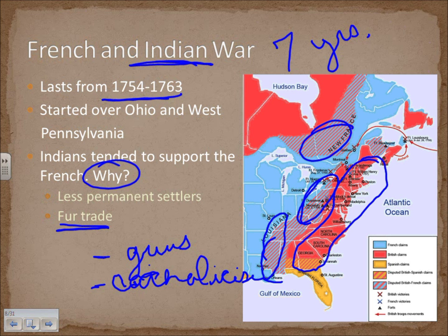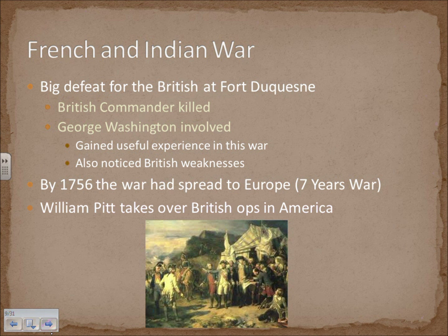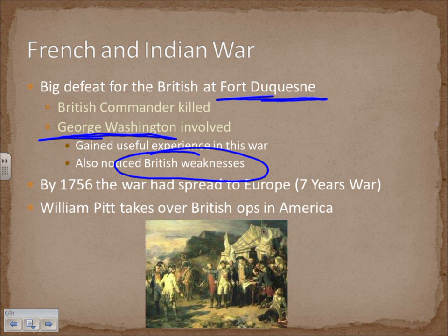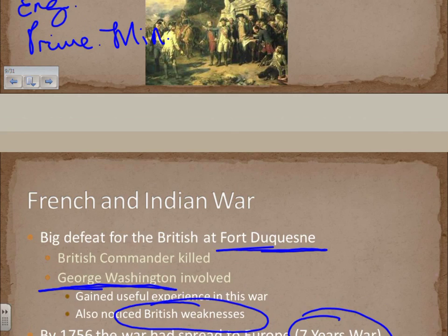The British waged an excellent war. They initially suffered a huge defeat at Fort Duquesne, where the British commander was killed. George Washington gained valuable experience in this war and noticed significant British weaknesses he would exploit later. By 1756 the war spread to Europe. William Pitt became prime minister, took over British operations in America, proved to be a strong war minister, and shifted the war's favor toward the British.